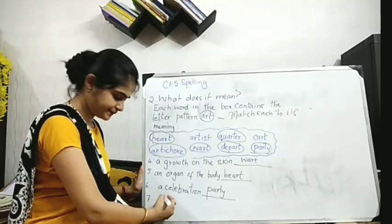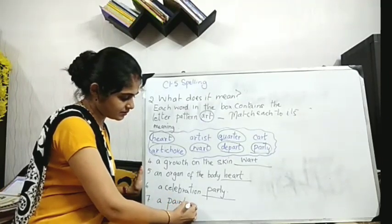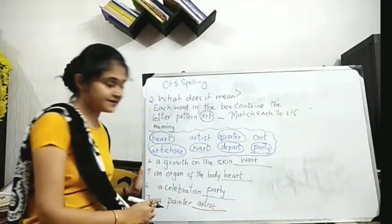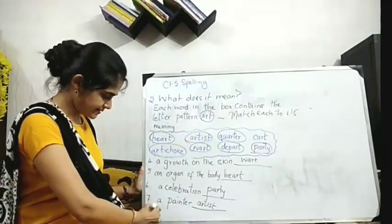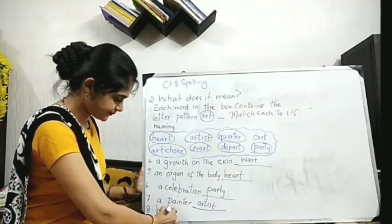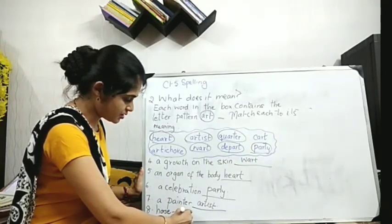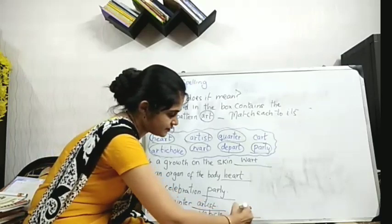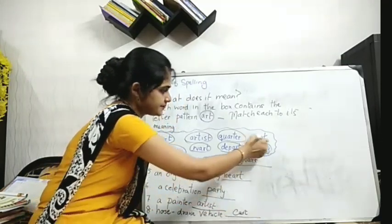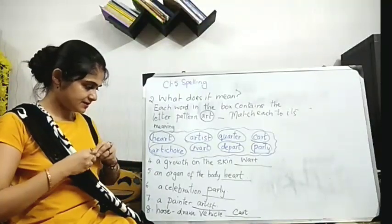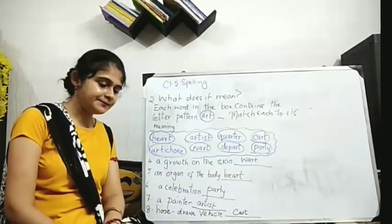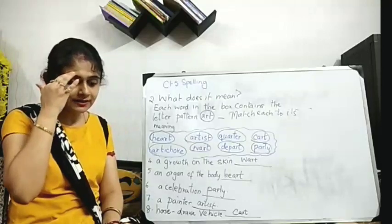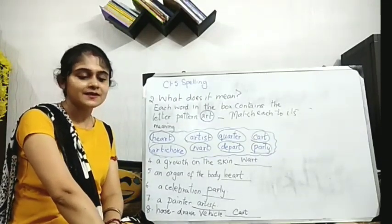Number seven: a painter - who is called a painter? An artist, right? Class 5, done. Then number eight, the last one: horse-drawn vehicle. What is it? You all know - horse-drawn vehicle: C-A-R-T, right? I will just repeat it. Number one depart, then artichoke, then quarter, then wart, then heart, then party, then artist, then cart.